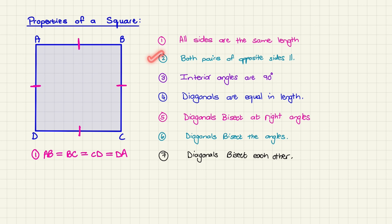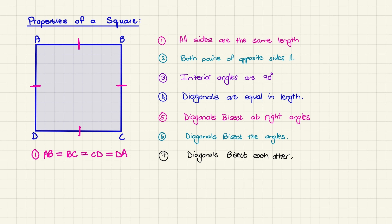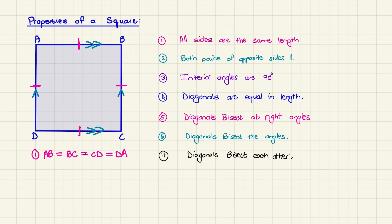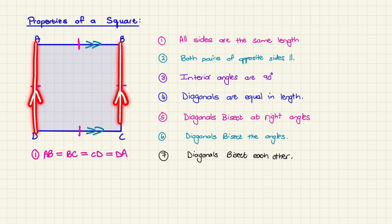The second property is that both pairs of opposite sides are parallel. So AB is parallel to CD, and BC is parallel to AD. We indicate parallel lines by using a little arrow on the sides that are parallel to one another. AB and DC each have two arrows, meaning those two lines are parallel, and BC and AD each have one arrow, showing those two lines are parallel to one another.